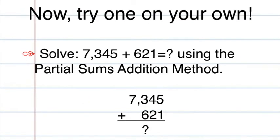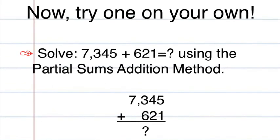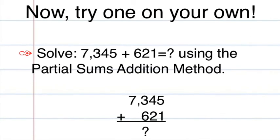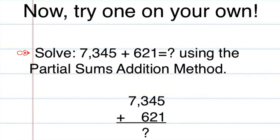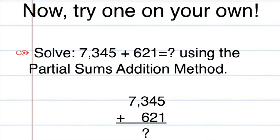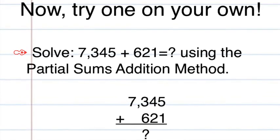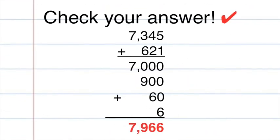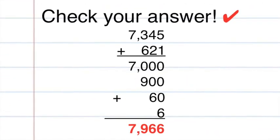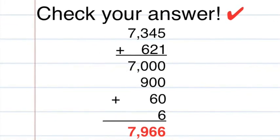Now I know you would love to try one on your own. Please add 7,345 to 621 using the partial sums addition method. Good luck! Now let's check your answer — I hope everyone got 7,966. If not, you can always work through more practice problems. If you did, great job.